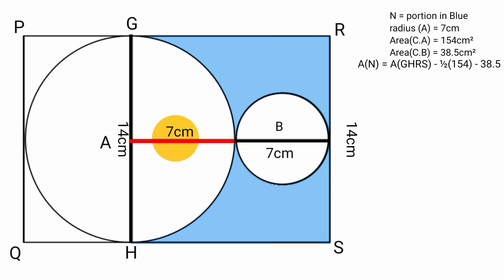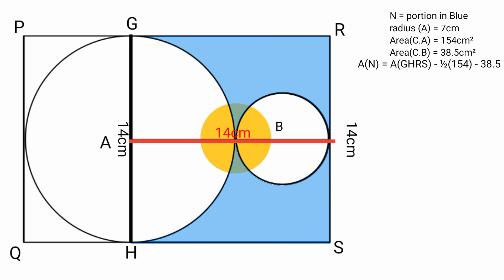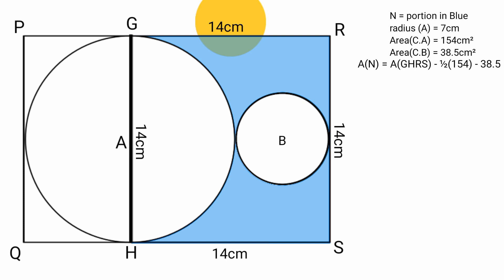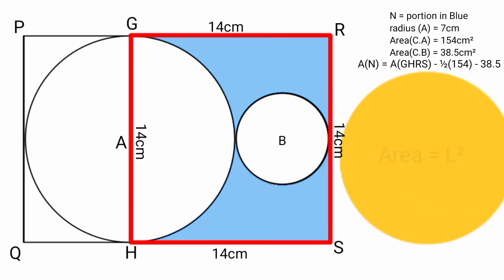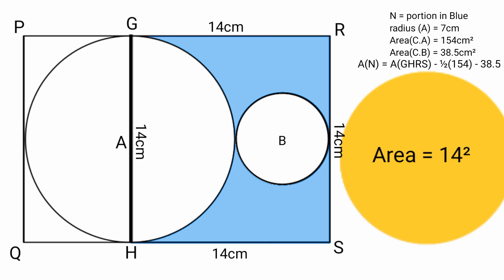We have the diameter of circle B as 7 centimeters and the radius of circle A as 7 centimeters, giving the side length as 7 + 7 equals 14 centimeters. Since this equals 14 centimeters, the other two sides are also 14 centimeters, as they are parallel and equal. So GHRS is a square with all sides equal to 14 centimeters. Its area equals 14 squared equals 14 × 14 equals 196 centimeters squared.